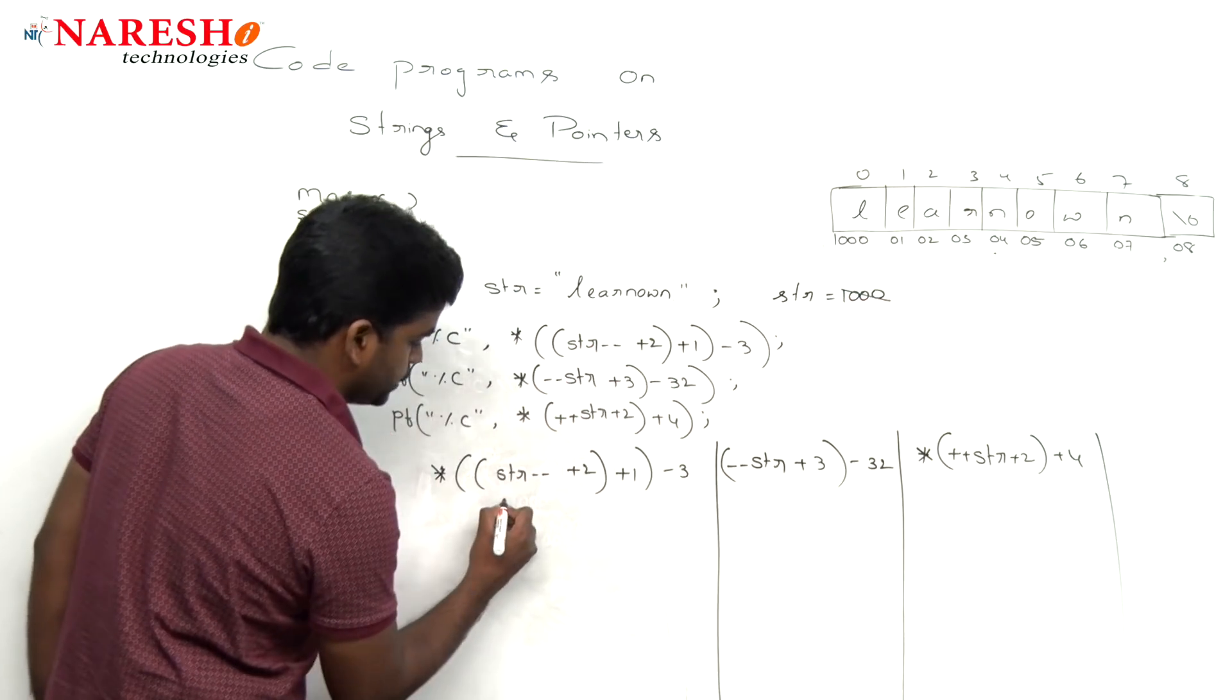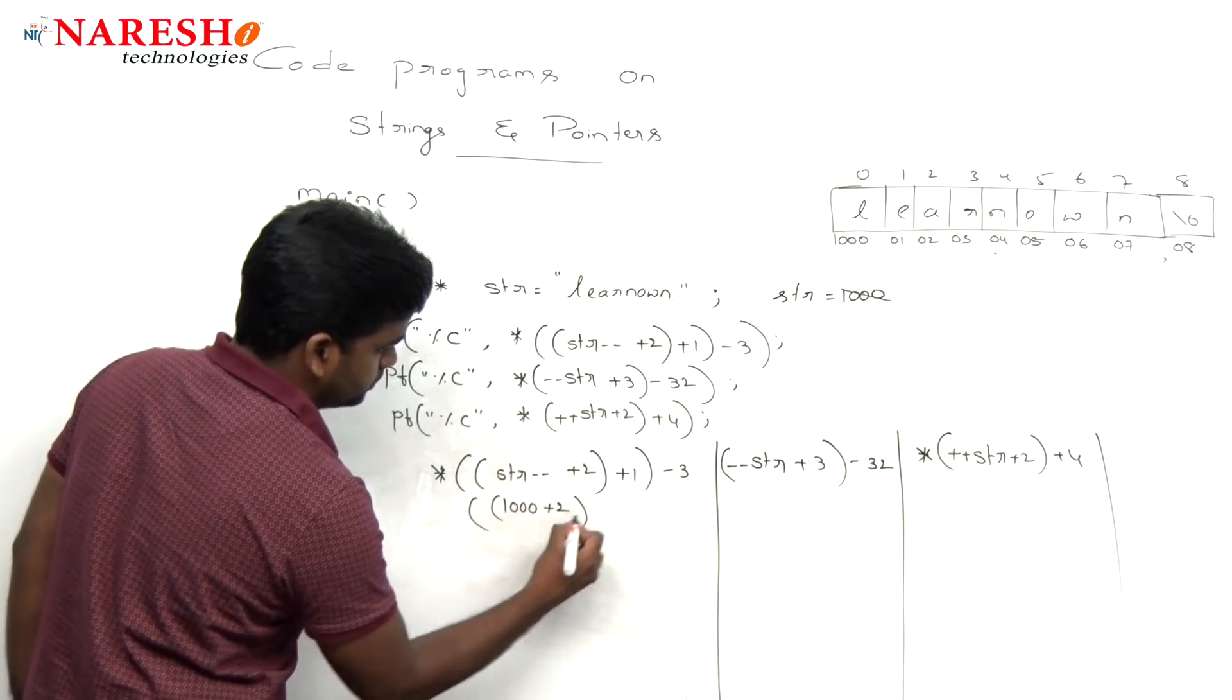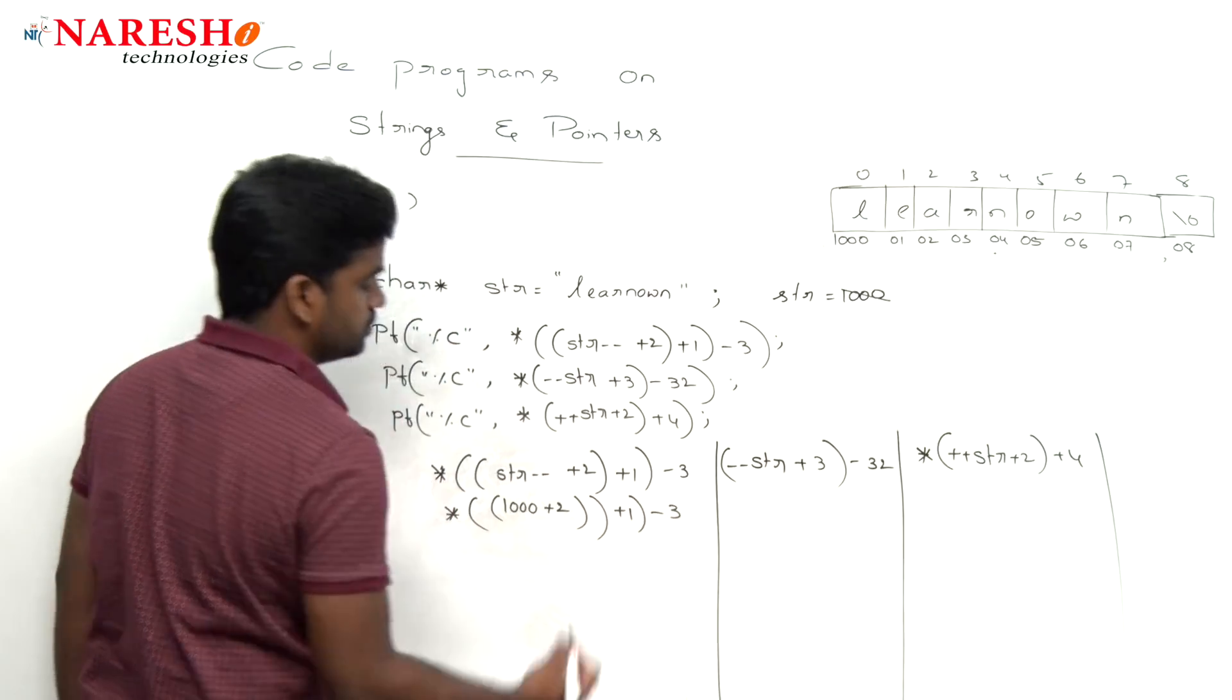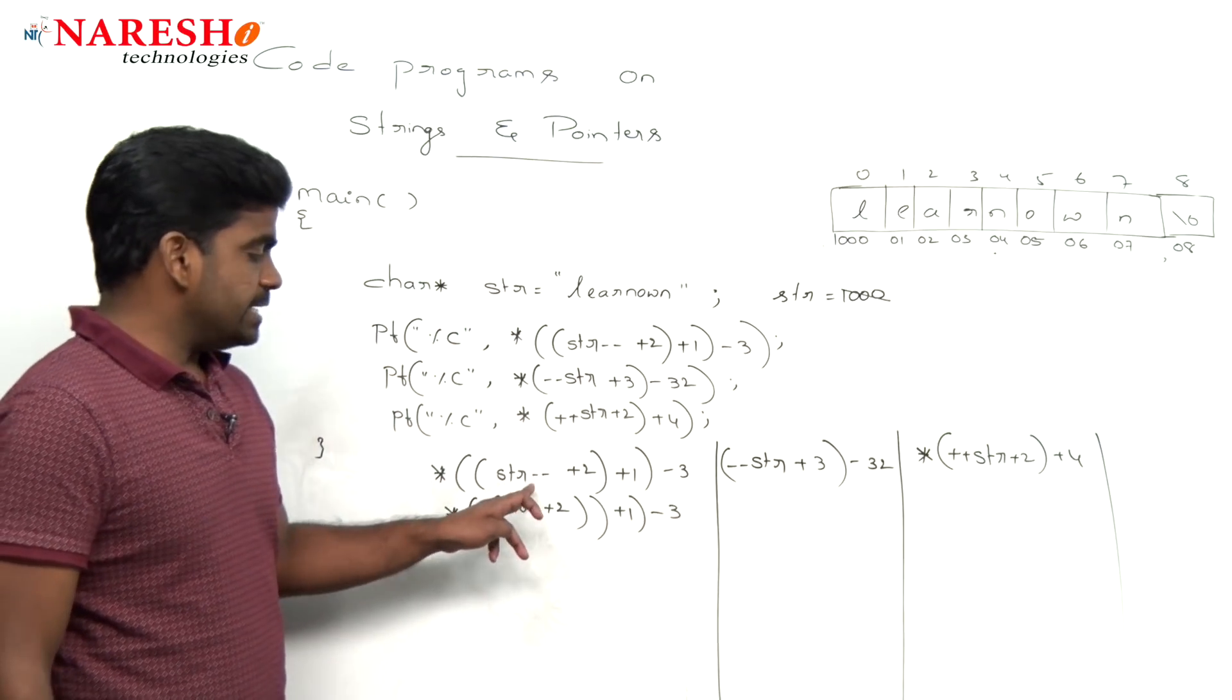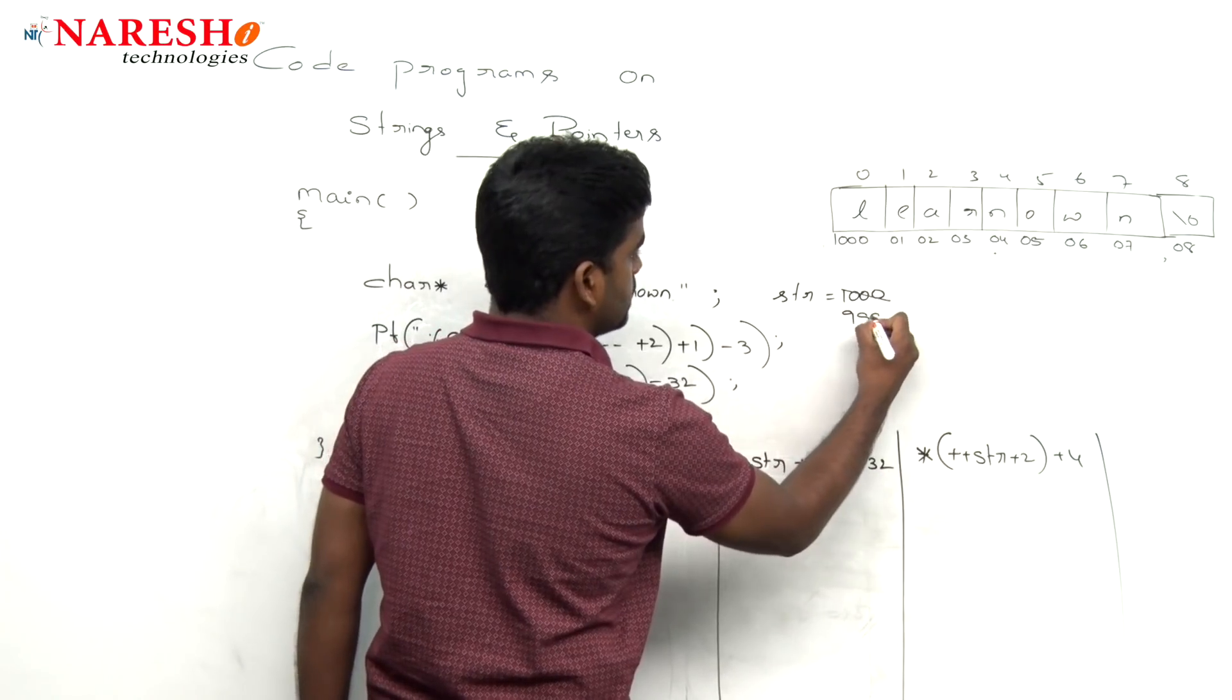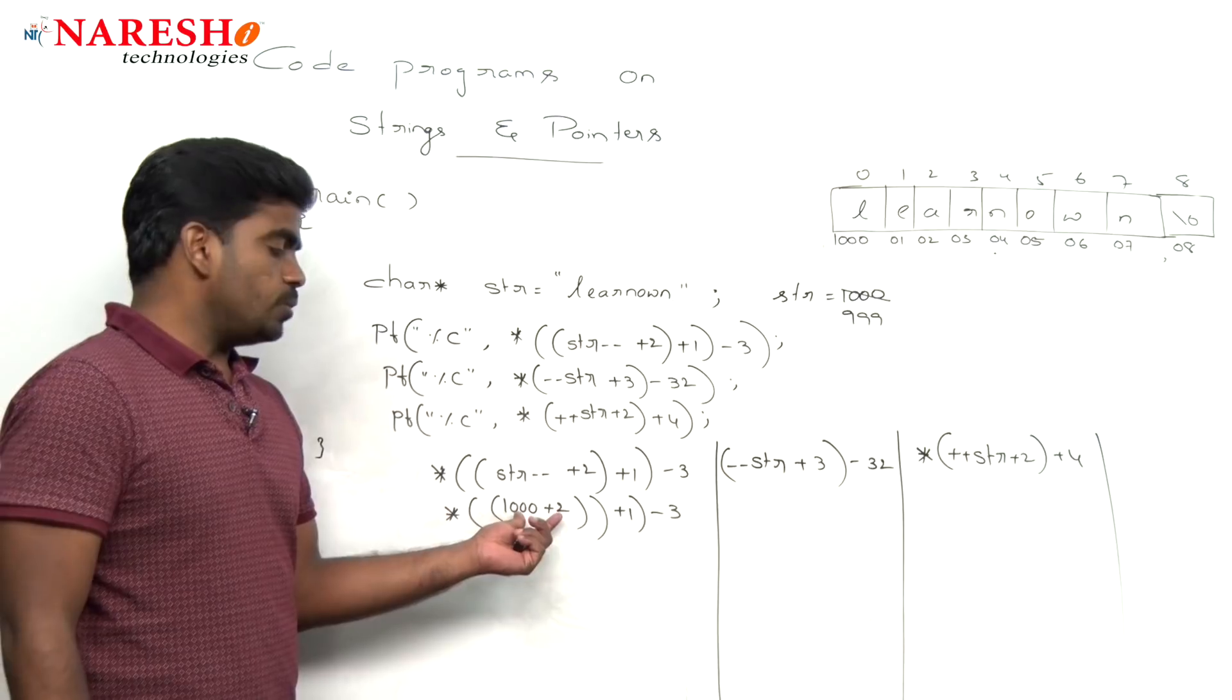First it will substitute that value 1000, 1000 plus 2. And next post decrement means what? The value becomes decreased by 1. So this is 999 we took like this.